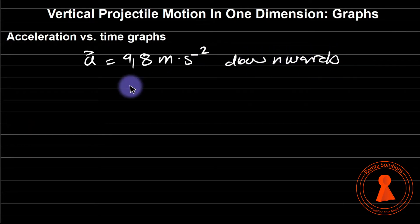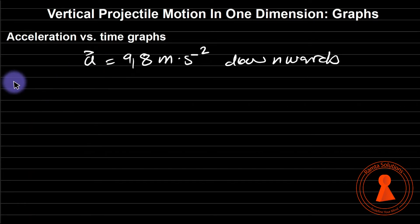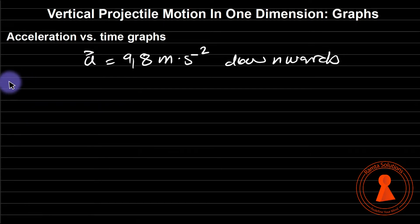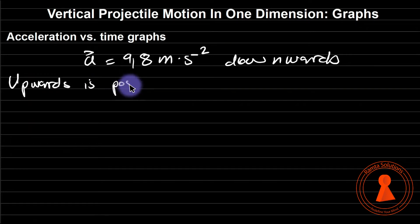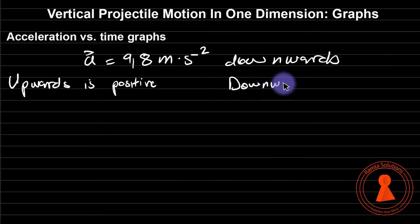Because these are vector quantities and we're dealing with vector calculations, we always have to choose a direction to be positive and another direction to be negative. I will start with upwards is positive, then also look at downwards being positive.